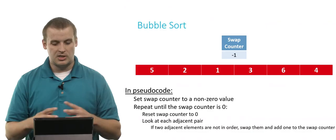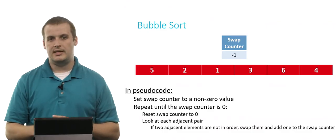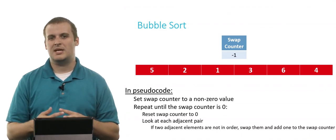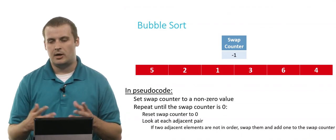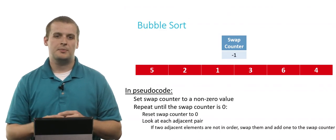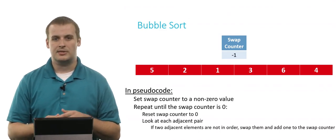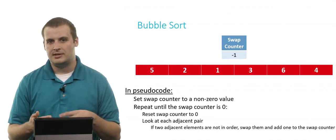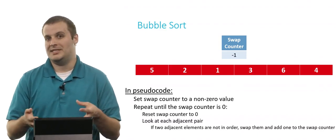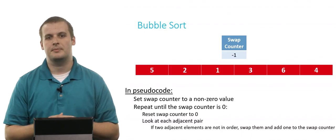Let's visualize how this might look using our array that we use to test out these algorithms. We have an unsorted array, indicated by all of the elements being in red. I set my swap counter to a non-zero value — I arbitrarily chose negative one. It's not zero, and we want to repeat this process until the swap counter is zero. This is why I set my swap counter to some non-zero value, because otherwise the swap counter would be zero and we wouldn't even begin the process.